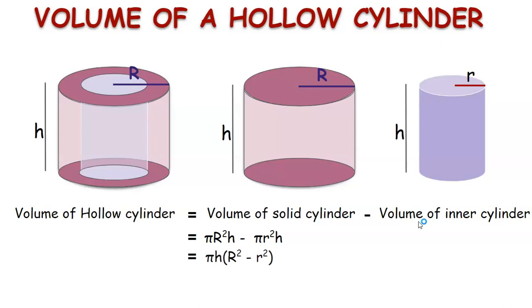we get pi h into capital R square minus small r square, which also can be written as pi h into capital R plus small r into capital R minus small r.